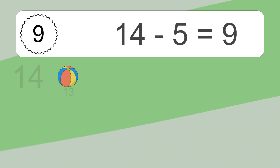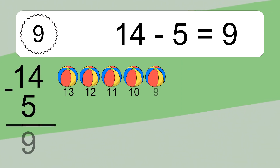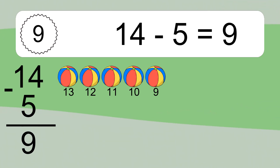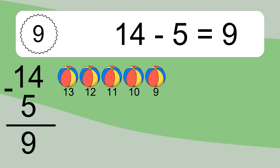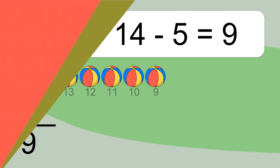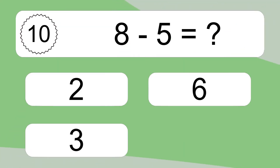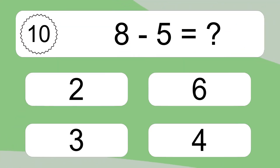14 minus 5 equals 9. Let's count it: 13, 12, 11, 10, 9. 8 minus 5 equals what?